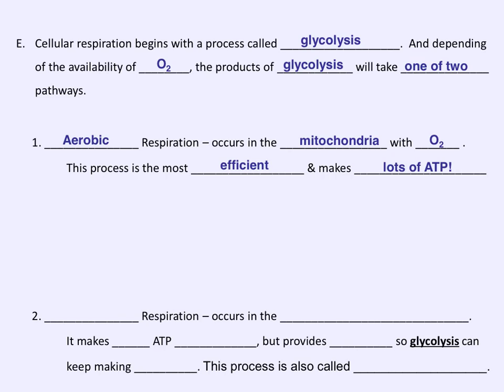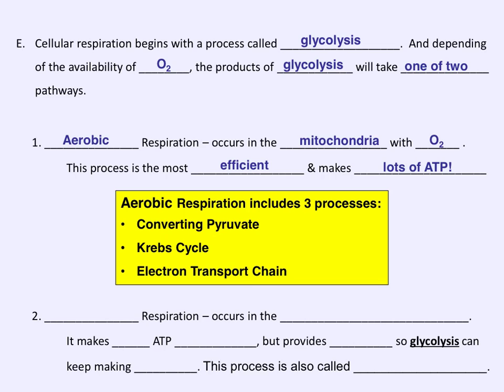Think about aerobics — when a person is doing aerobic activity, they're breathing in a lot of oxygen gas to compensate for what their muscles are doing. So remember: the word aerobic implies the use of lots of oxygen gas. This aerobic pathway is conducted over three separate steps: converting pyruvate, the Krebs cycle, and the electron transport chain. The biology book combines the first two together, but either way they're both being done, followed by the electron transport chain.